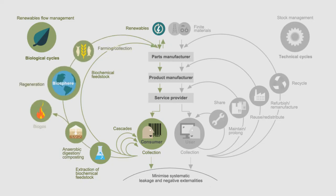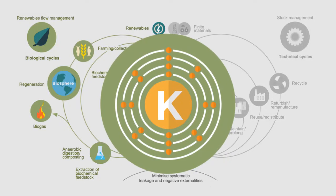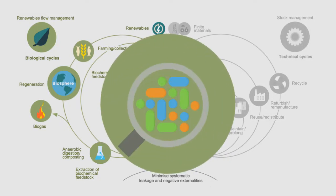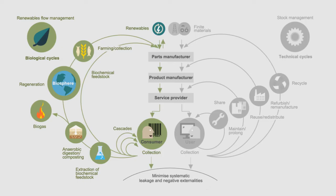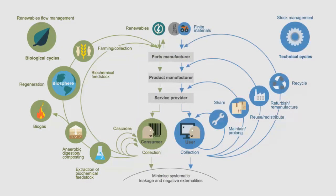Organic materials that can't be used further can be composted or anaerobically digested to extract valuable nutrients such as nitrogen, phosphorus, potassium and micronutrients. Important examples of materials that can go through this cycle include household food waste or sewage sludge.